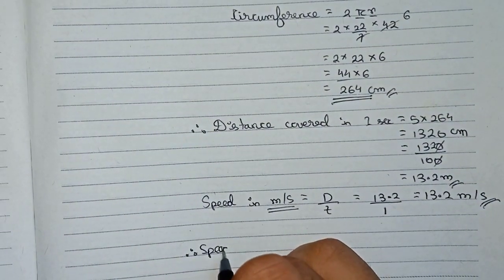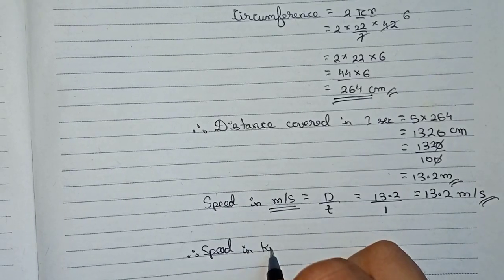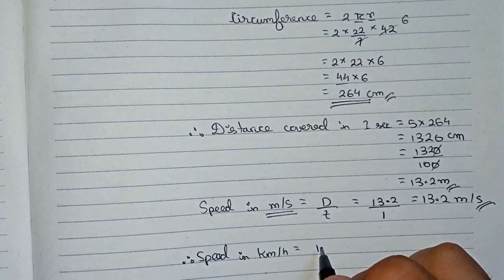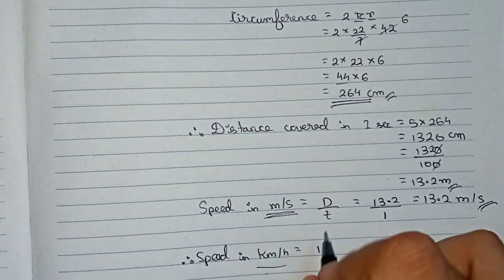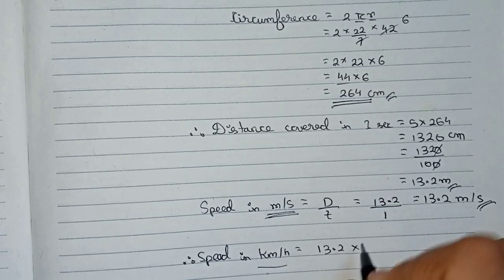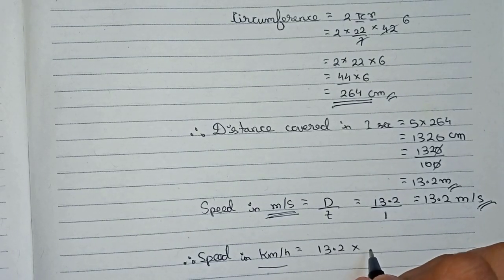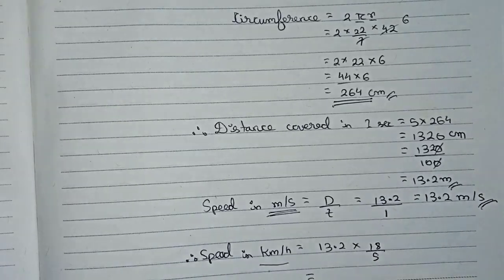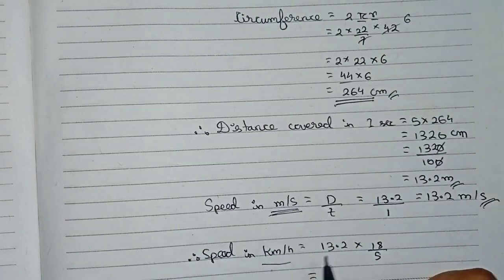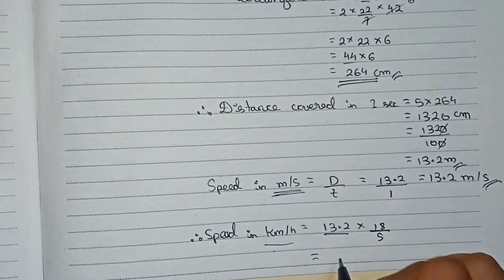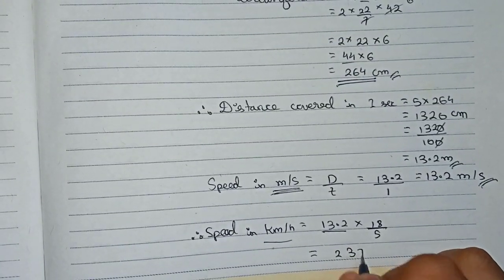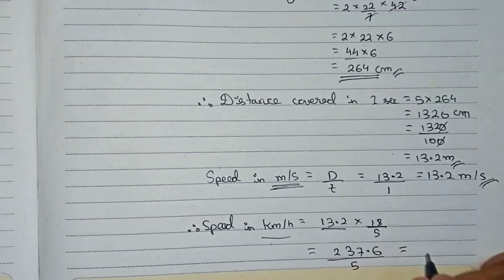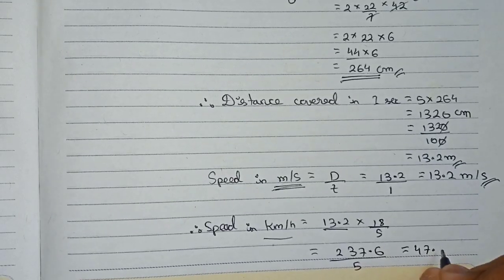To convert from meters per second to kilometers per hour, we use the formula: multiply by 18/5. So multiplying 13.2 by 18 gives 237.6, and dividing by 5 gives 47.52 kilometers per hour.